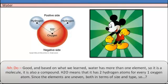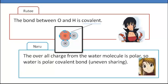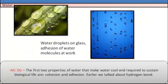H2O means that it has two hydrogen atoms for every one oxygen atom. Since the elements are uneven, both in terms of size and type. The first two properties of water that make water cool and required to sustain biological life are cohesion and adhesion. Earlier we talked about hydrogen bonds.